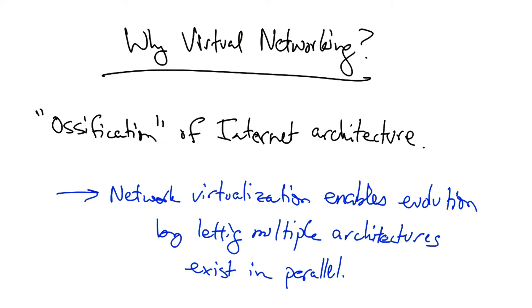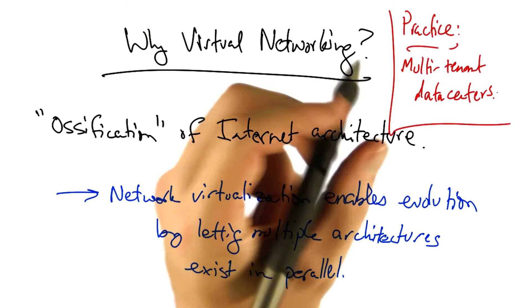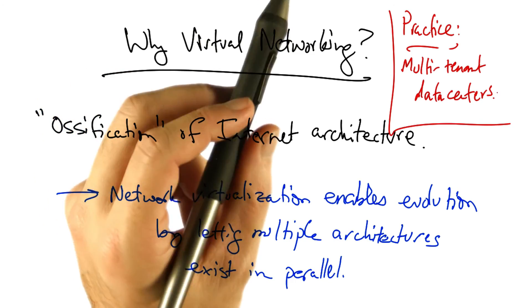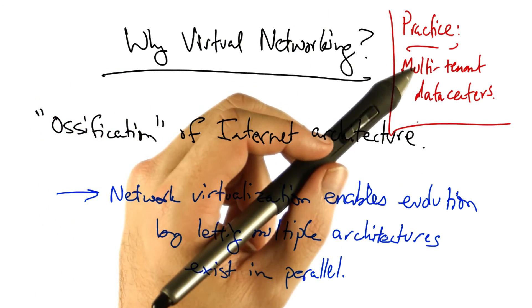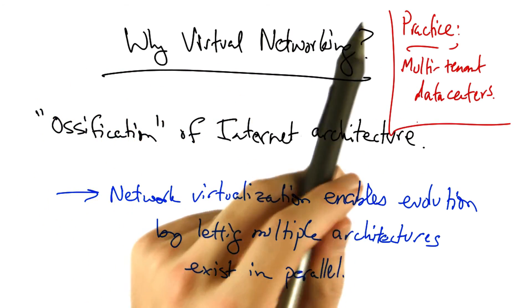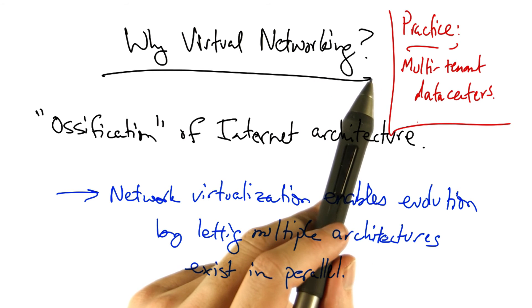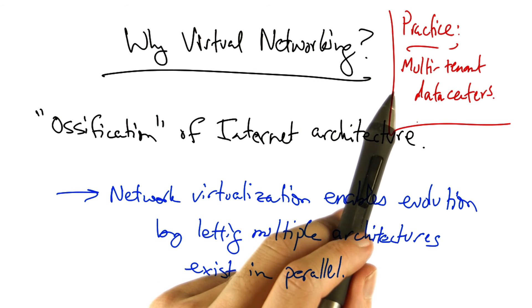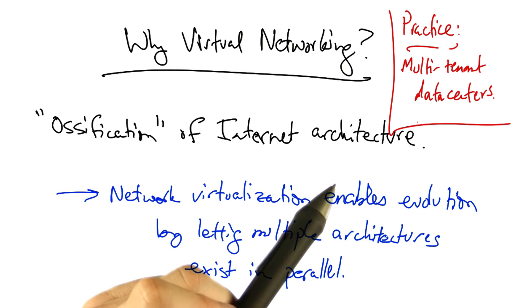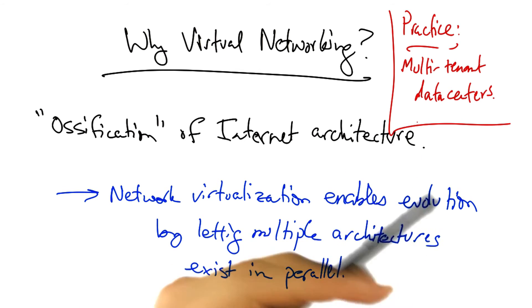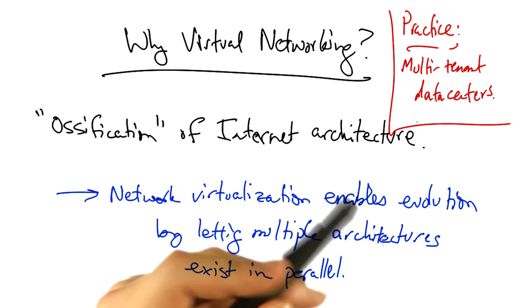Now this was sort of a green field view of why virtual networking was potentially a good idea. In practice, network virtualization has really taken off in multi-tenant data centers, where there may be multiple tenants or applications running on a shared cluster of servers. Well known examples of this include Amazon's EC2, Rackspace, and things like Google App Engine.